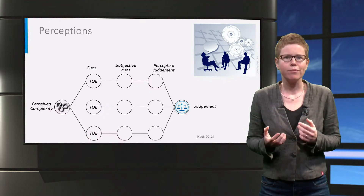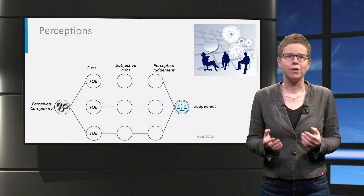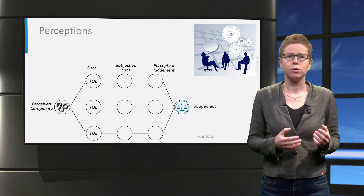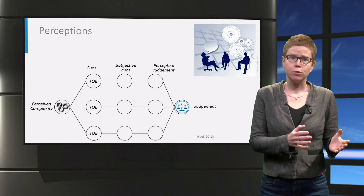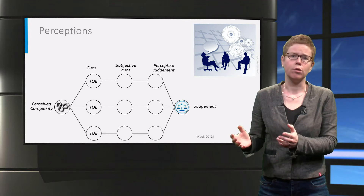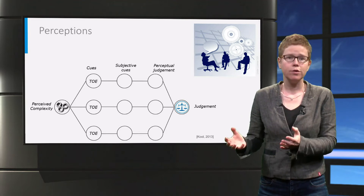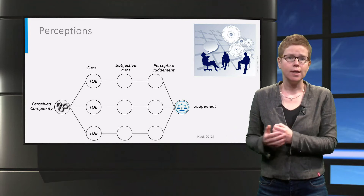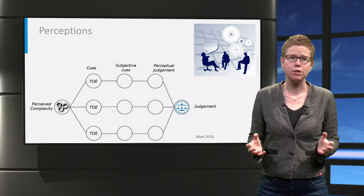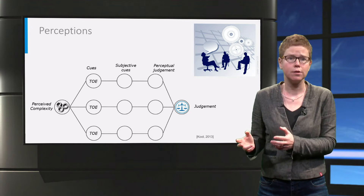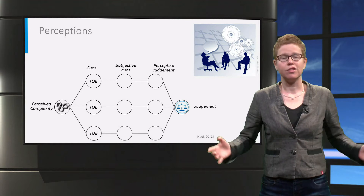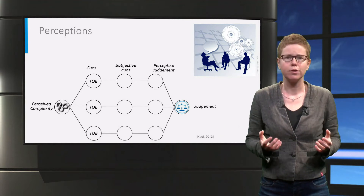Where does your perception come from? Without losing ourselves in psychology, we combine two models developed by Shearer, Stewart and Lusk, combining perceptual judgment and related cues. These cues can be seen as triggers, or in our case, elements of complexity. In the end, the perceived complexity of a project is created by the selection of certain elements of project complexity — these cues — followed by a judgment of these elements, and the sum of these forms perceived complexity.